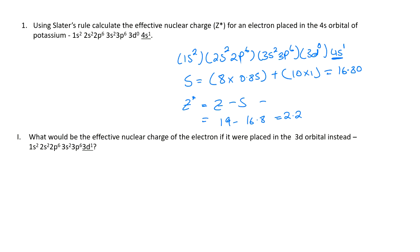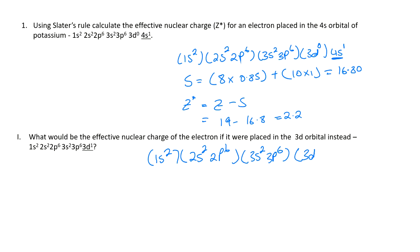So the next question is: what would be the effective nuclear charge if this electron was instead in the 3d orbital? So if we didn't have this weird thing where the 4s is filled before the 3d, what would happen then? We carry out the same exercise, except in this case the configuration we're looking at would be 1s2, 2s2, 2p6, 3s2, 3p6 — and these are kind of special with Slater's rules — so we put 3d1 here instead.